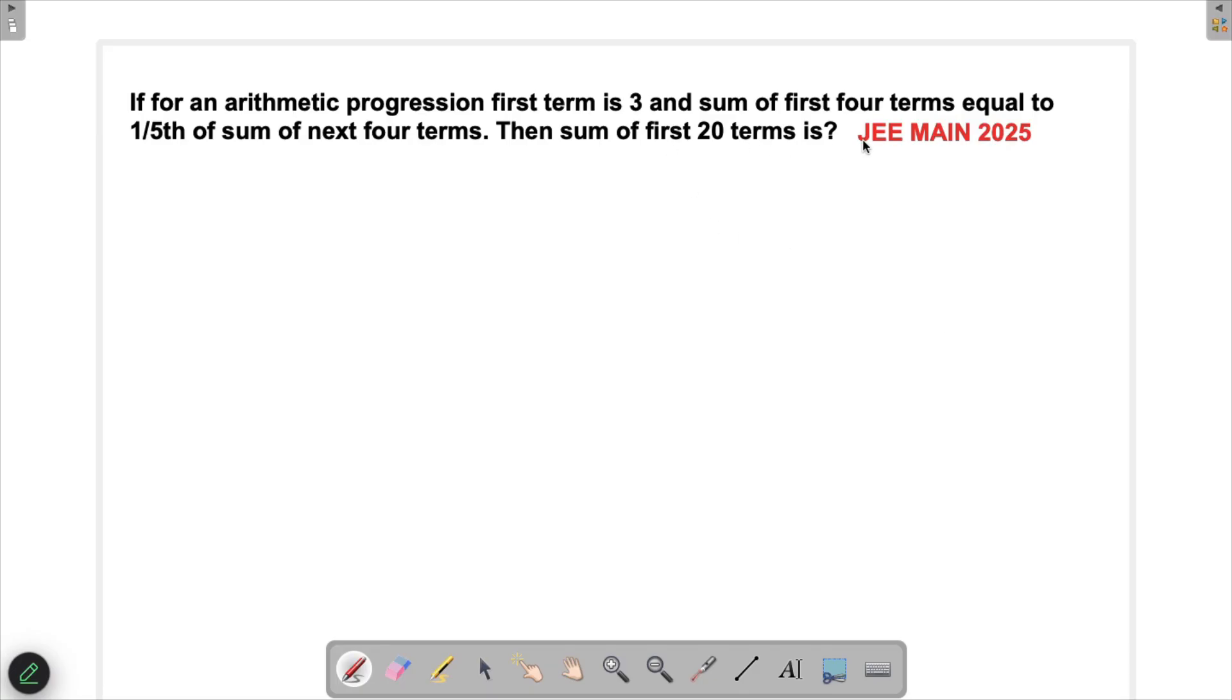Let's solve a problem which appeared in JEE MAIN 2025. This is a simple problem from arithmetic progression. The question says: if for an AP, the first term is 3 and the sum of first four terms equals one-fifth of the sum of the next four terms,